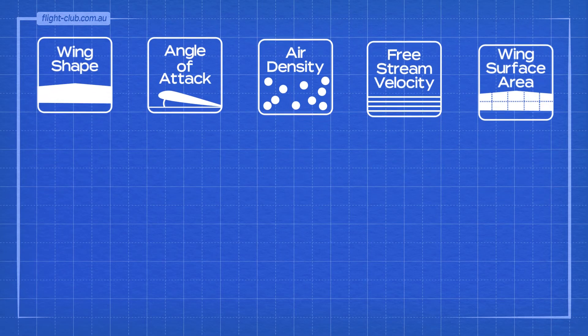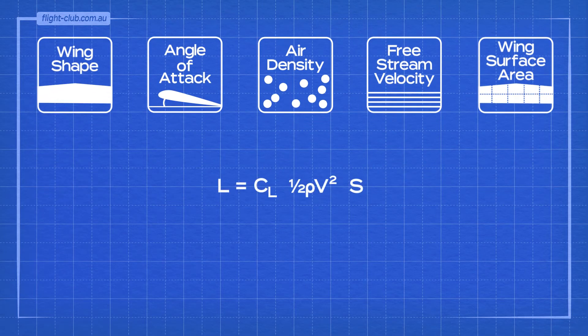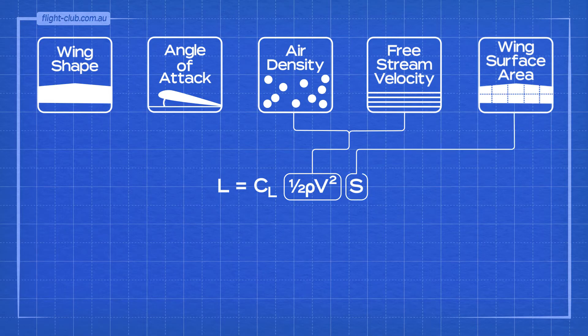So how do these factors fit inside the lift formula? Air density and the free stream velocity combined together form the expression for dynamic pressure. This is like kinetic energy of the relative airflow and it fits perfectly here. Wing surface area goes here.